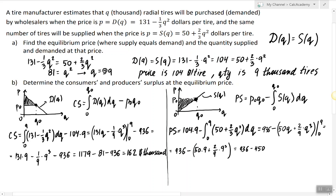So here we have 936 minus 450 minus 2 times 81. So 936 minus 450 is 486 and 486 minus 2 times 81 is 324. So this is how we find the producers and consumers surplus at the equilibrium price.